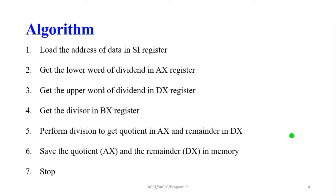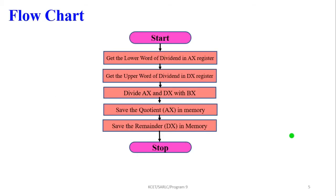Now, moving to the algorithm. First, load the address of data into the SI register. Next, get the lower 16-bit word of the dividend into the AX register. Then get the upper 16-bit value of the dividend into the DX register. Perform the division between the dividend (in AX and DX) and the divisor. The quotient is stored in AX and the remainder in DX. Finally, the AX and DX values are moved into the respective memory locations.